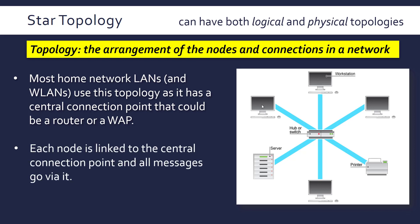So if this workstation here wants to connect to the server, it will send a message via this switch, and it will go to the server. The wires are all connecting to the central point, which distributes the messages to the other areas. A hub will just repeat all the messages and send them out, whereas the switch will be more selective and send it to the correct device.